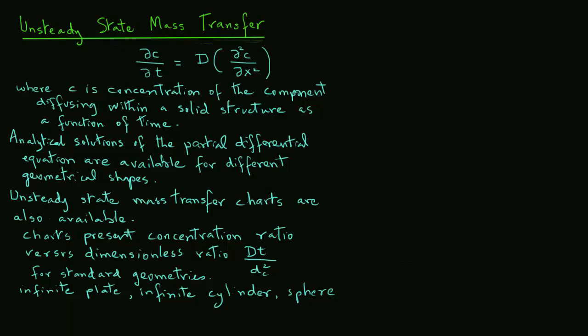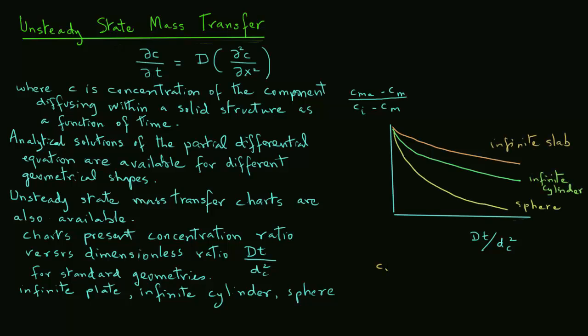The charts are constructed with the concentration ratio on the y-axis, where we have (CMA - CM)/(CI - CM), and on the x-axis with Dt/Dc². We will find plots for a sphere, infinite cylinder, and infinite slab. CMA is the mass average concentration at any time t, CM is the concentration of the diffusing component, and CI is the initial concentration.